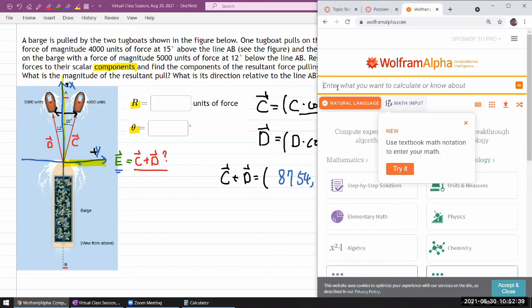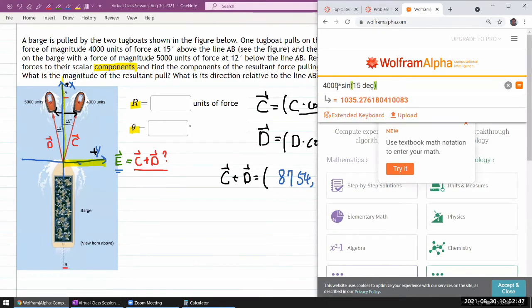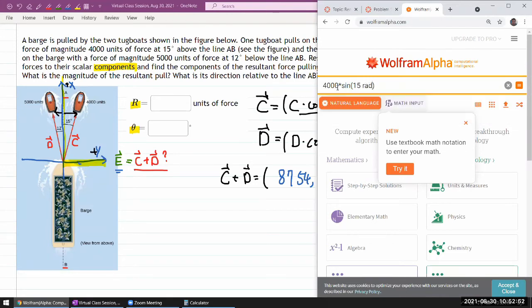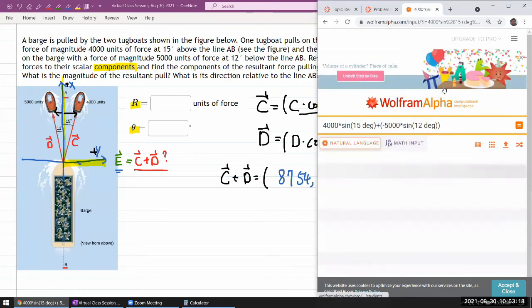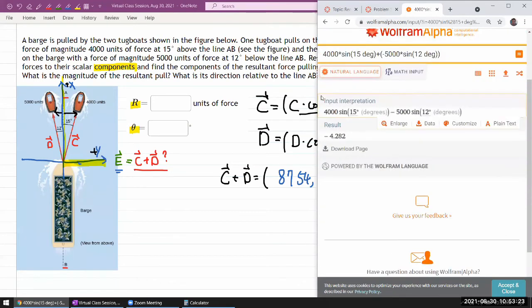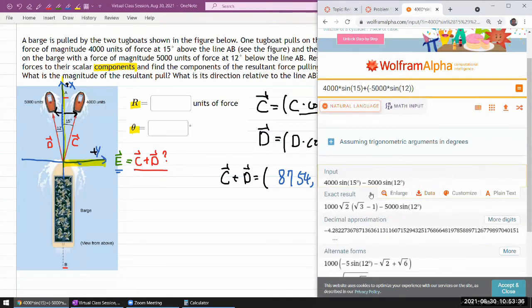You can think of WolframAlpha.com as basically an online calculator. And frankly, oftentimes it's much more intuitive and user-friendly to use than scientific calculators because the way you use it is you basically type in the expressions. So here, for the y-component, it's going to be C times the sine of 15 degrees. So 4000 times the sine of 15 degrees. I do want to make sure I put in degrees because it might mistakenly think it's radians. Plus—and it's going to be minus 5000 times the sine of 12 degrees. This is one of the things that's nice—you can go back and fix it. Let me just press enter.